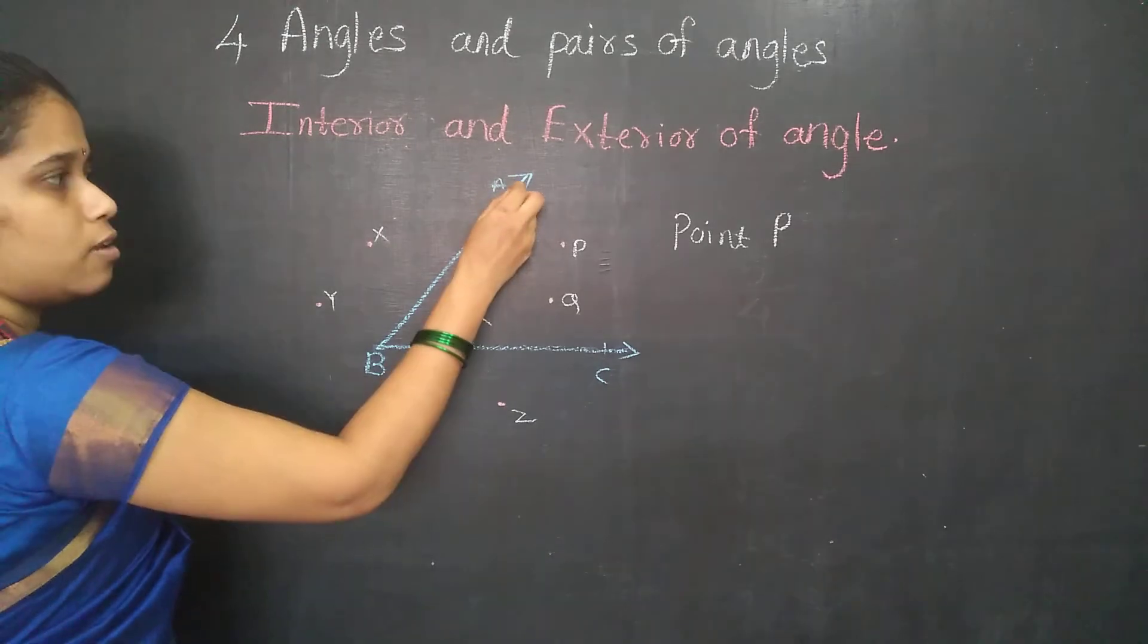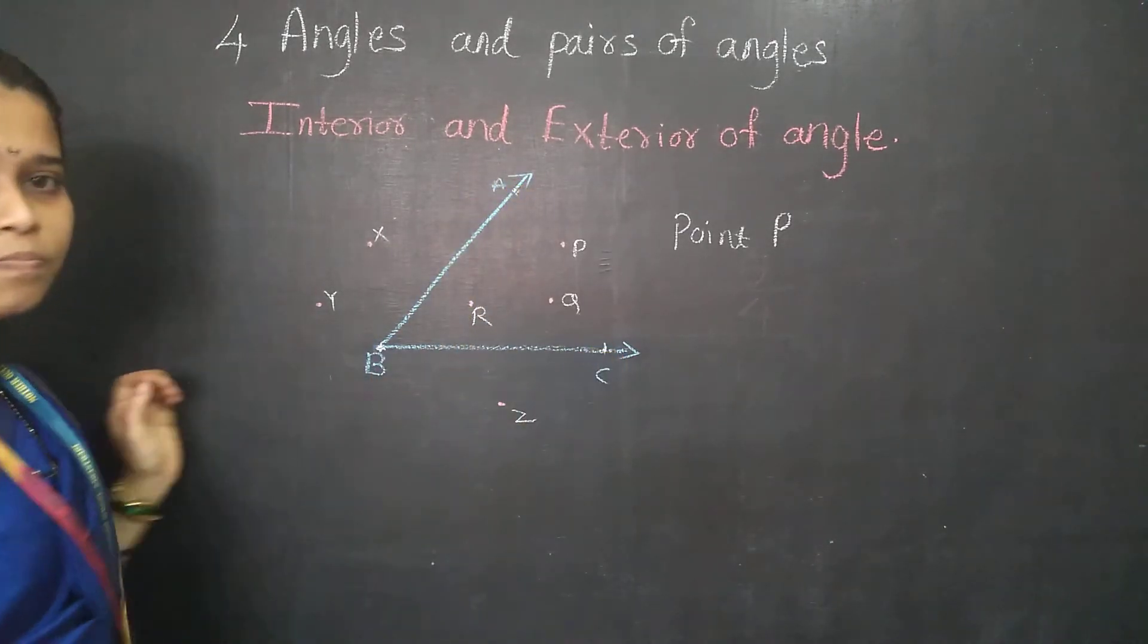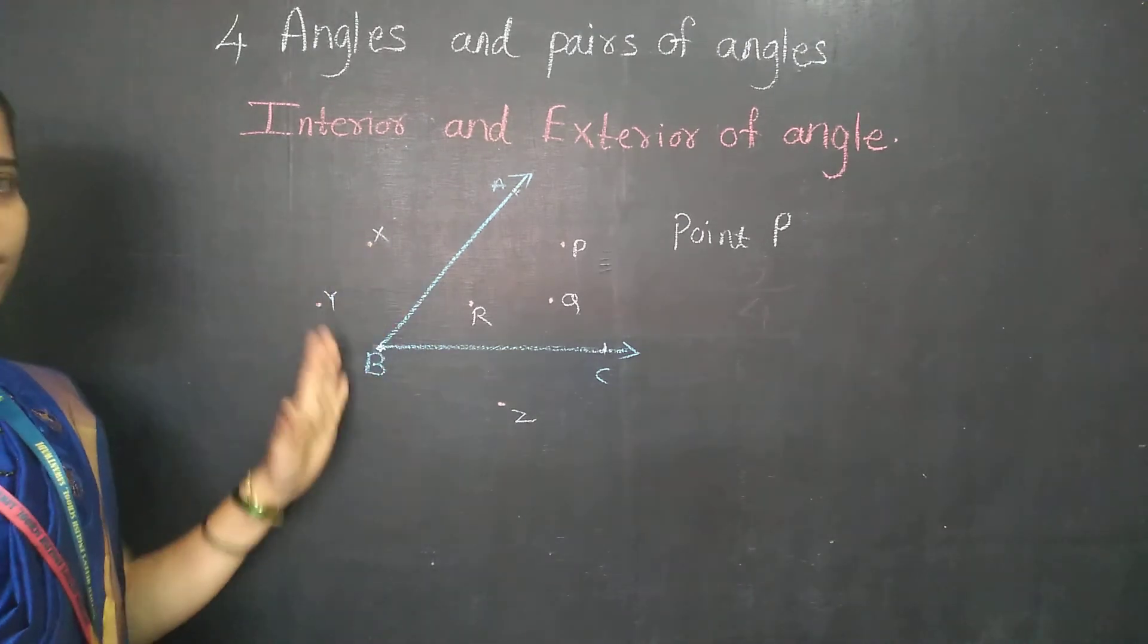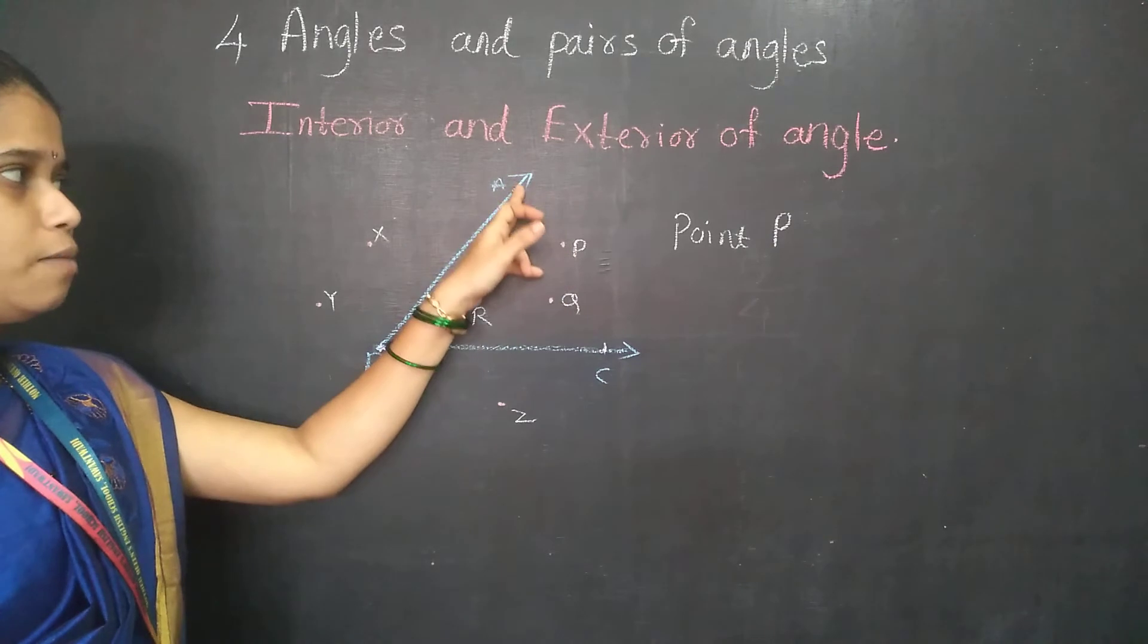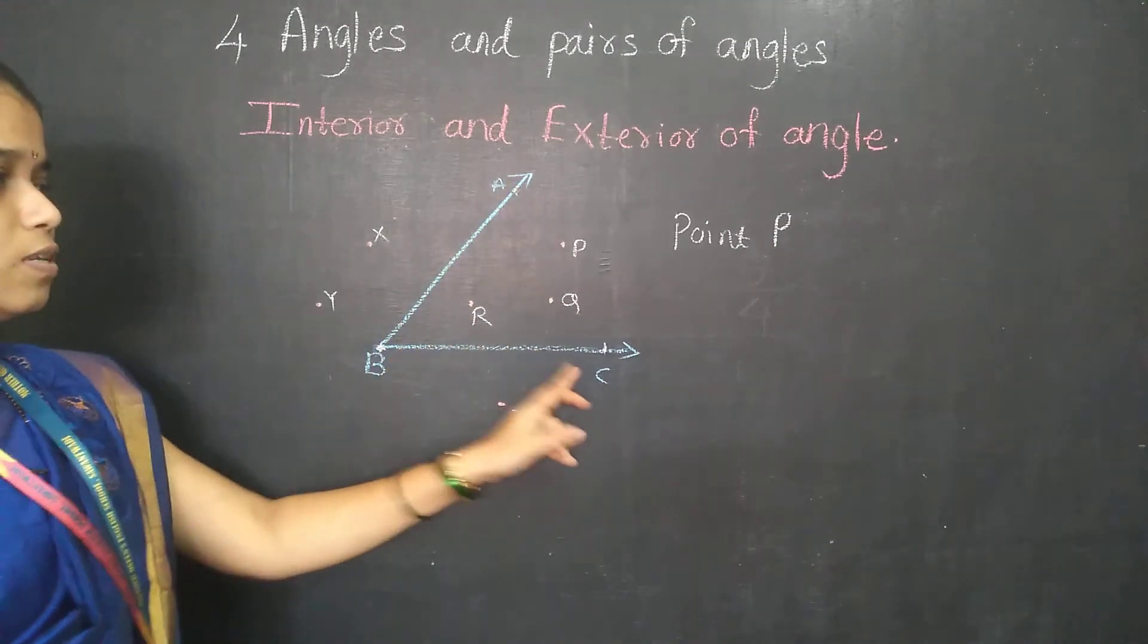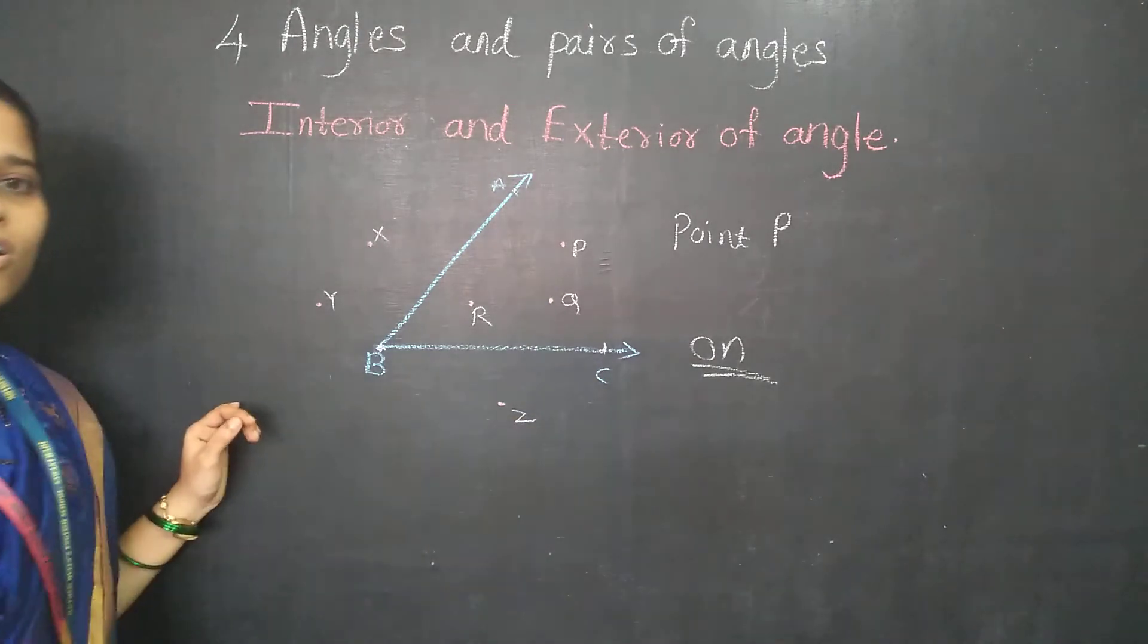Which are these points on the angle? This is A, this is B and this is C. There are many points on the angle, but which points are shown over there? This is A point, B point and C point, on the angle.